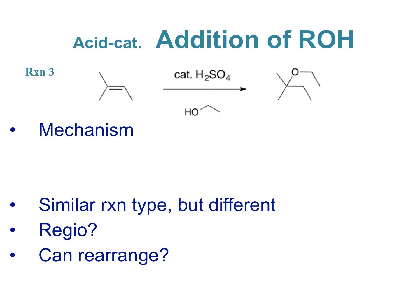That covers the hydration reaction. We also have another reaction to talk about — the addition of an alcohol to a double bond with an acid catalyst. What's different here versus the last one? We've got the same starting alkene as the nucleophile, and we still have acid, but our nucleophile is different — it's got an O but also has carbons on it. Because of that, instead of getting an alcohol as the product, we're going to get an ether.